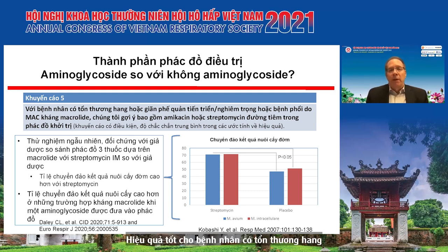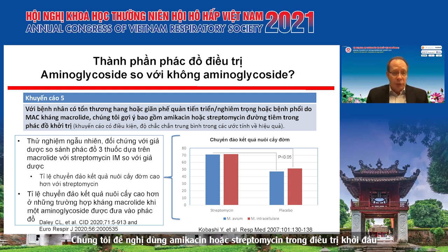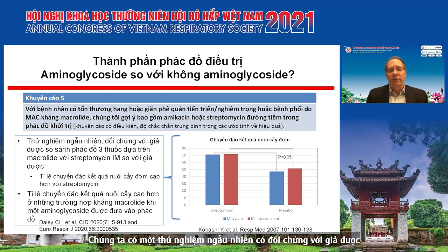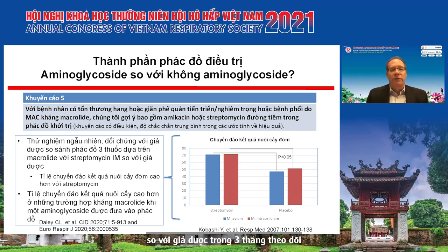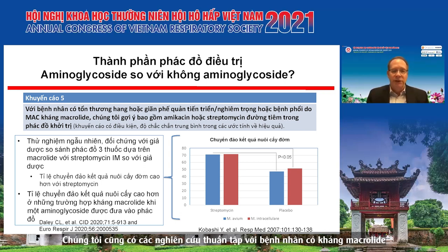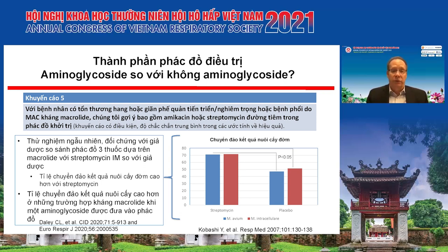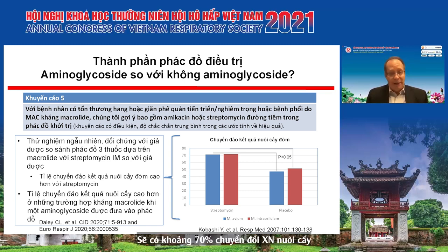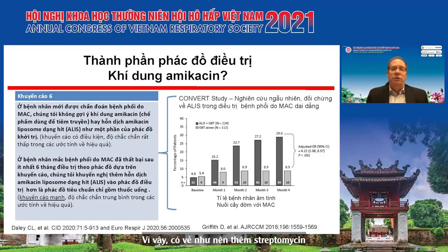What about an aminoglycoside? For patients with cavitary disease, advanced severe bronchiectatic disease, or macrolide-resistant disease, we suggest parenteral amikacin or streptomycin be included in the initial treatment regimen. A randomized placebo-controlled trial from Japan showed a higher rate of culture conversion with intramuscular streptomycin added to a three-drug regimen for the first three months. Whether patients had M. avium or M. intracellulare, those receiving streptomycin achieved approximately 70% culture conversion, compared to less than 50% in the placebo arm.